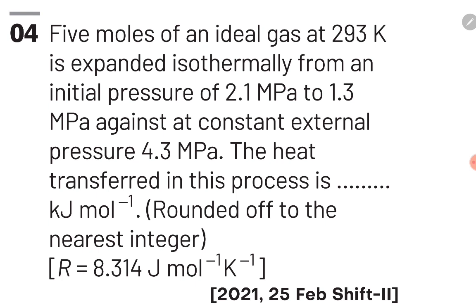Here, the external pressure is given as 4.3 MPa and ΔV is the change in volume. To find ΔV, we will use the ideal gas equation PV = nRT. In summary, we have three equations: ΔU = Q + W; W = −P_external × ΔV; and PV = nRT. Let's observe all of this in the solution in the next slide.